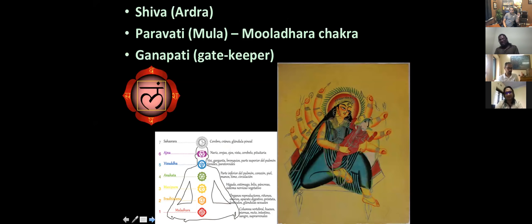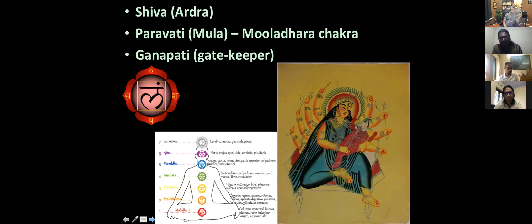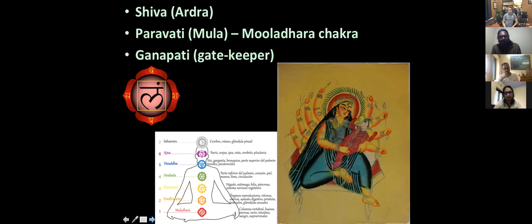Moolah may also be connected to the Mooladhara chakra, the base or root chakra. The seven chakras system has Ganapati guiding the Mooladhara chakra, with the shakti energy residing there wanting to rise up to the Sahasrara. The mooladhara is also called the root chakra, and the etymological connection with Moolah nakshatra - mool meaning root - seems very apt.